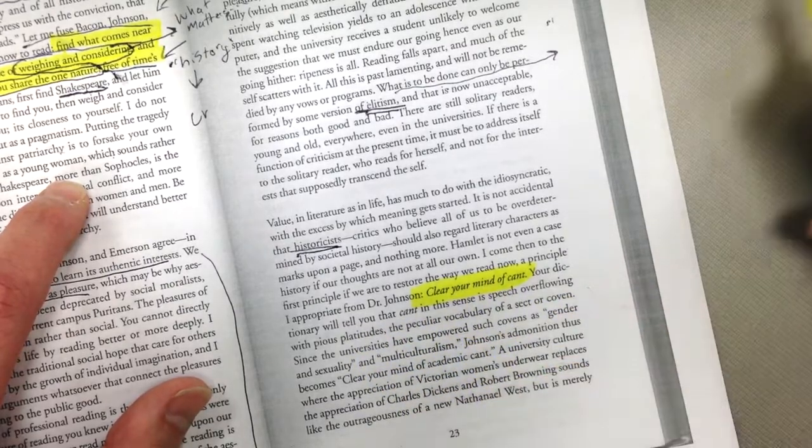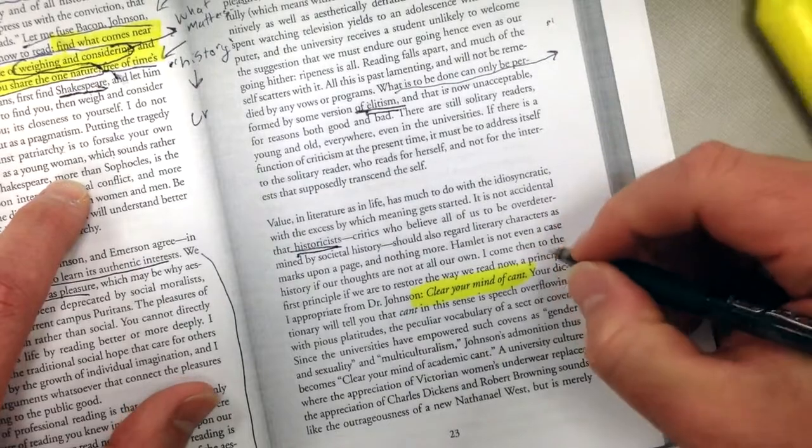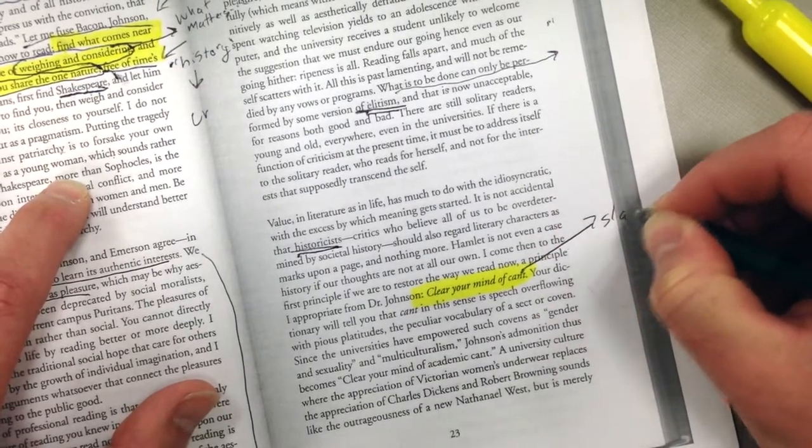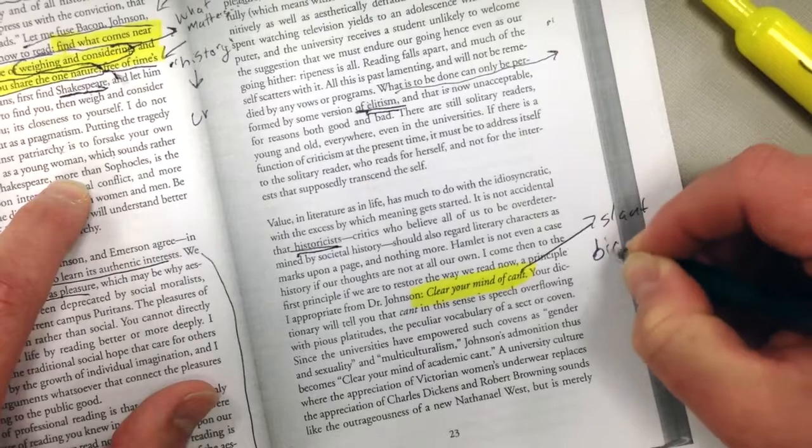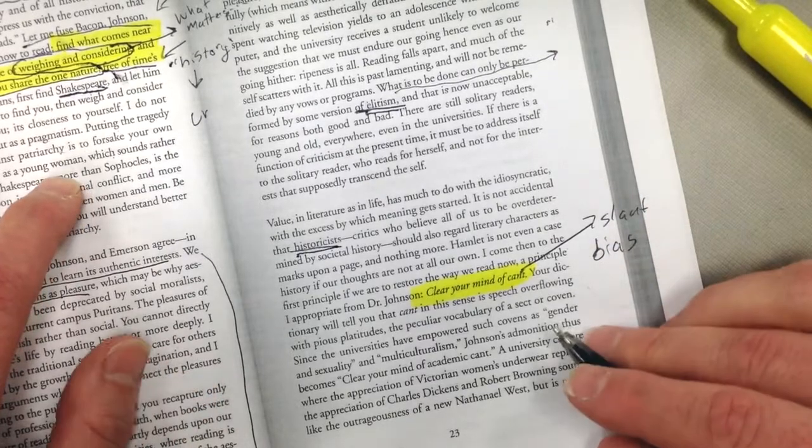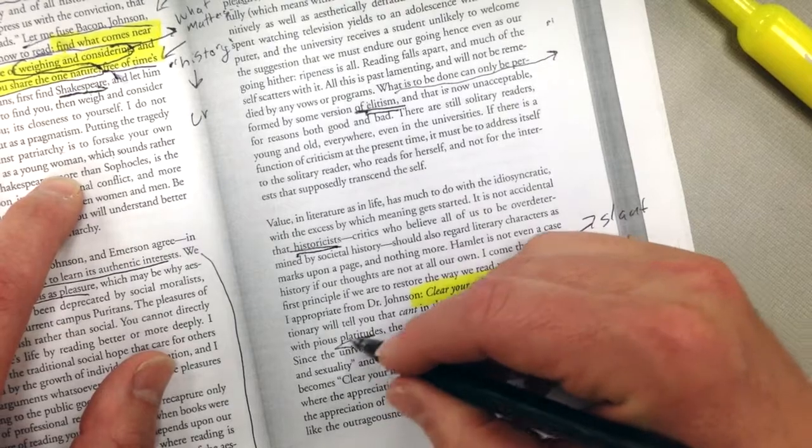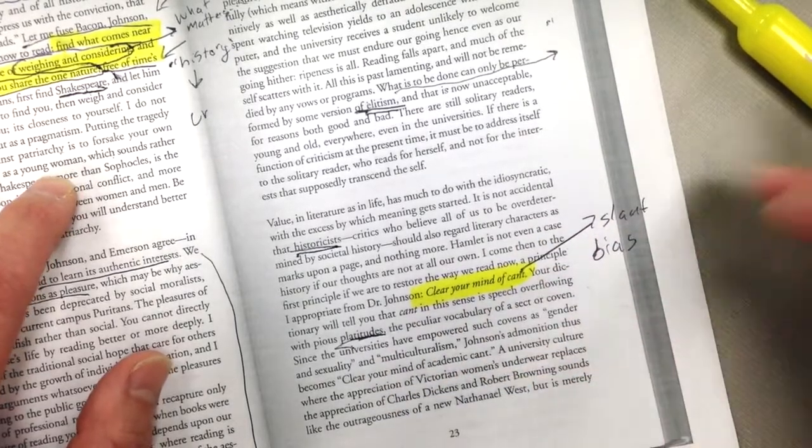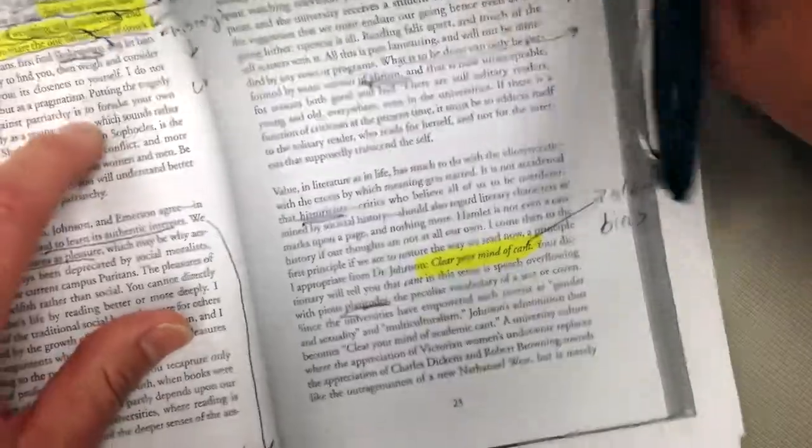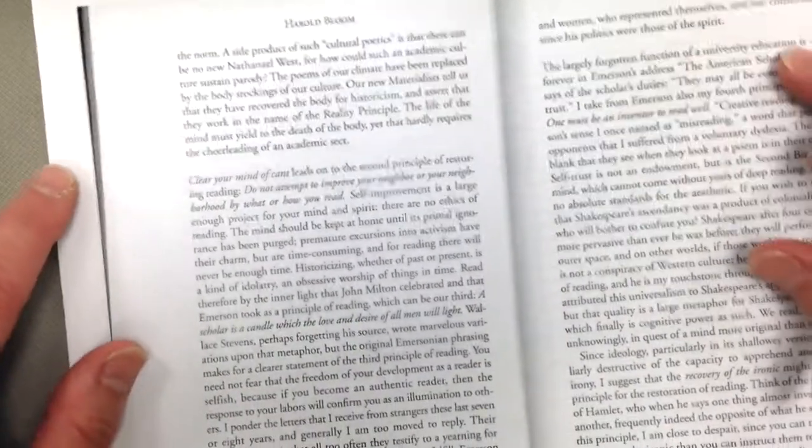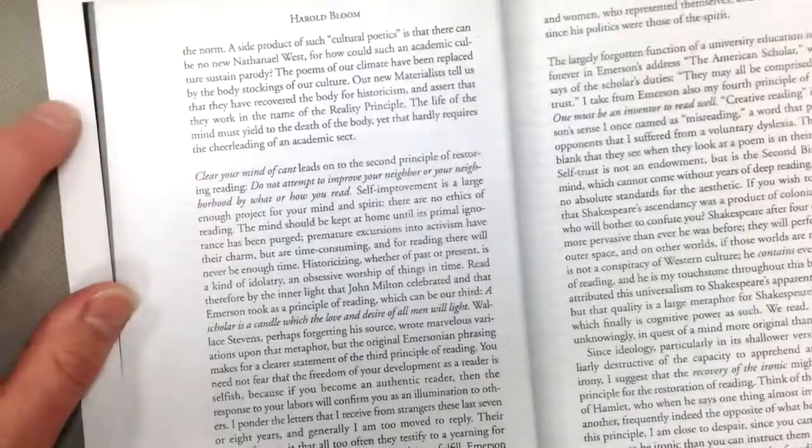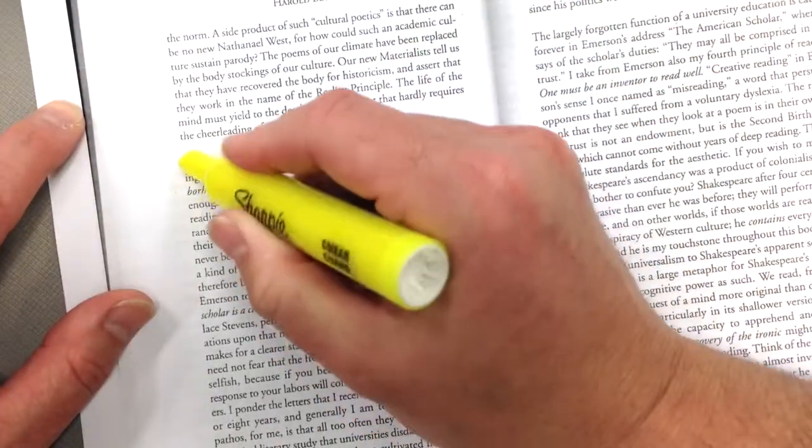So he's saying that, like, cant is a, the easiest way to say it is, like, slant, bias, platitudes. Platitudes, you don't have a lot of respect for platitudes. Okay, he doesn't like multiculturalism, which, again, is his point of view. And there are probably people in this building that disagree with that. I might be one of them. But, the good stuff are these four things. Okay, clear your mind of cant.